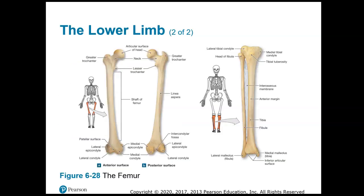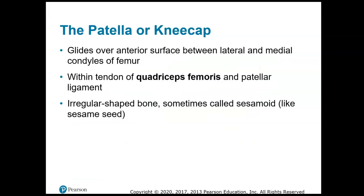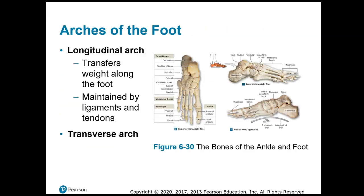For the lower limb, this is the femur — you can always tell it because of the large neck portion. The femur is the thigh bone. Then the leg bones are the fibula, which is on the lateral side, and the tibia, which is your shin bone. Your ankle bones are the tarsals.